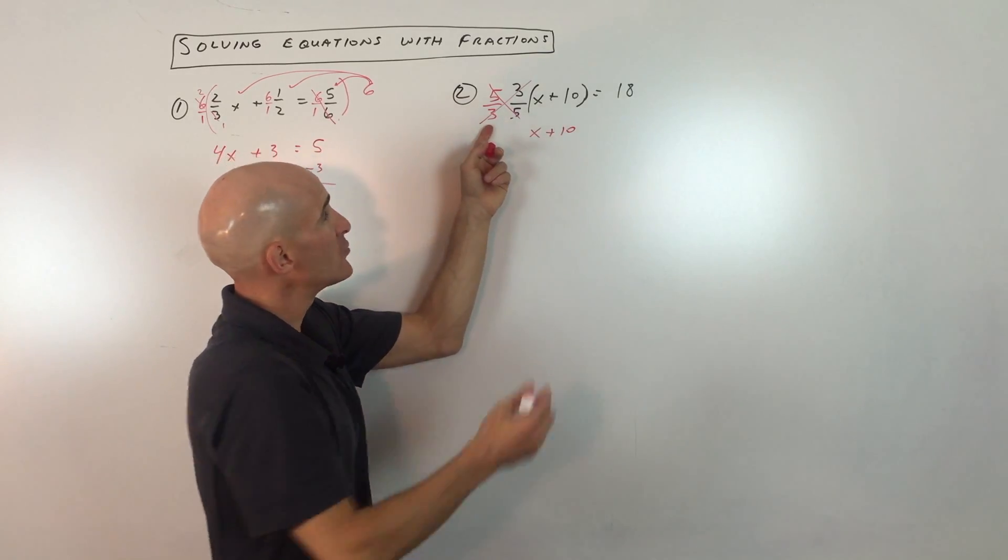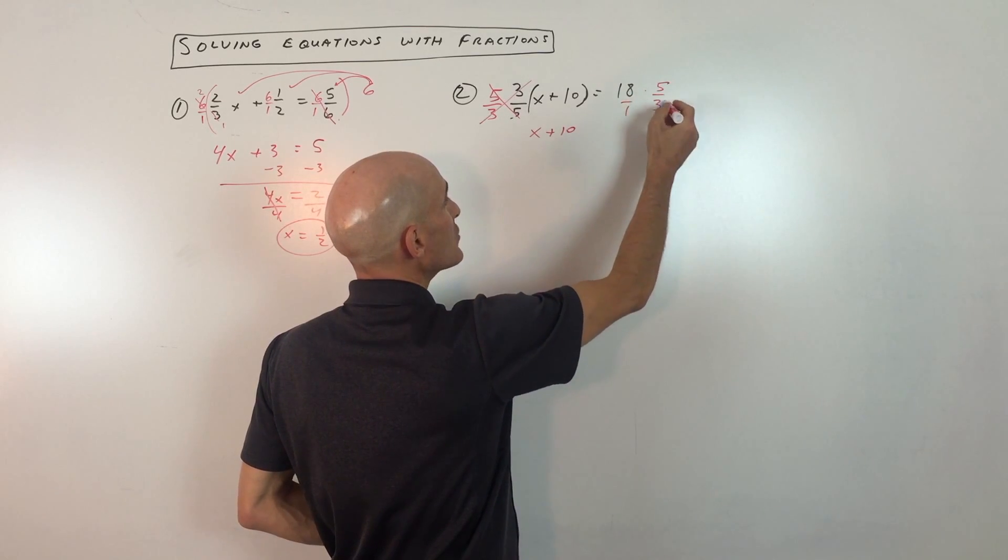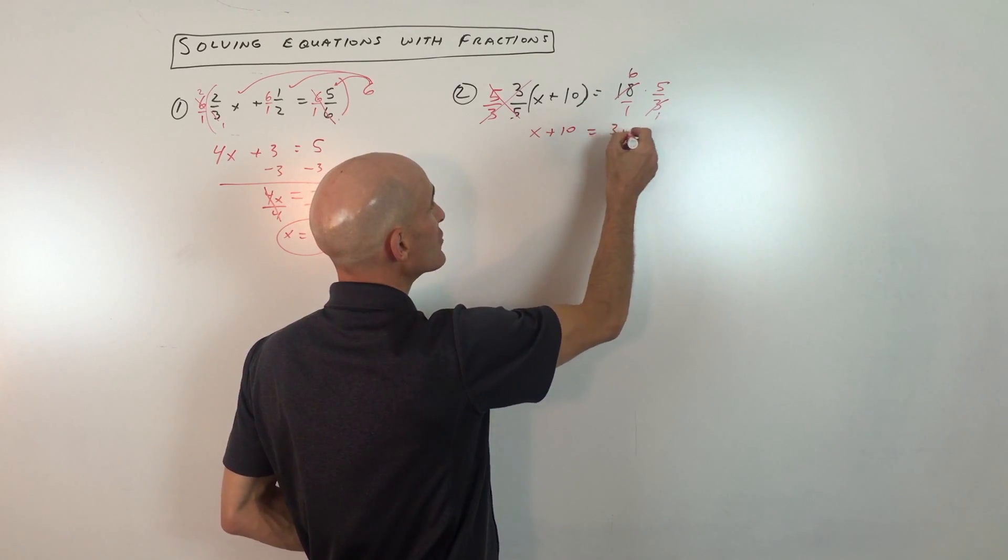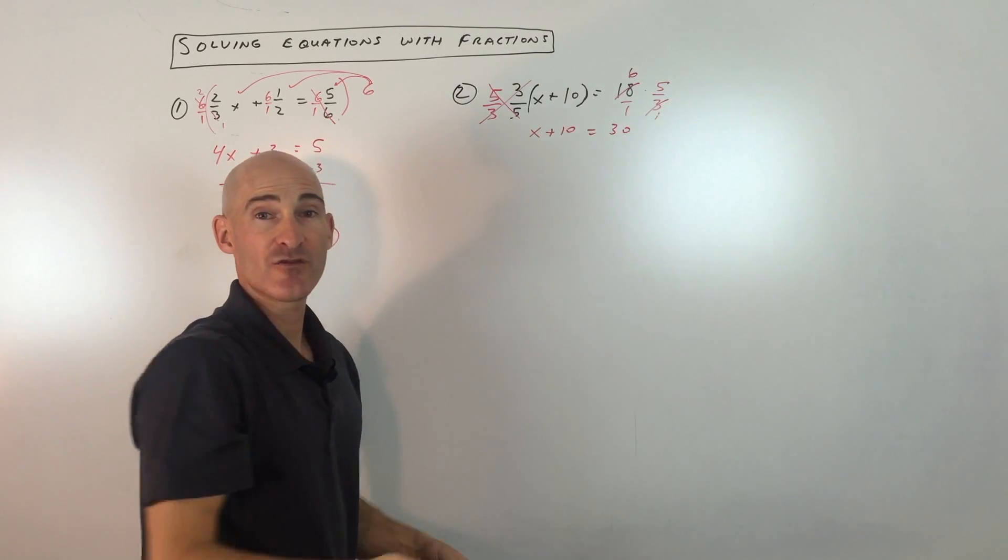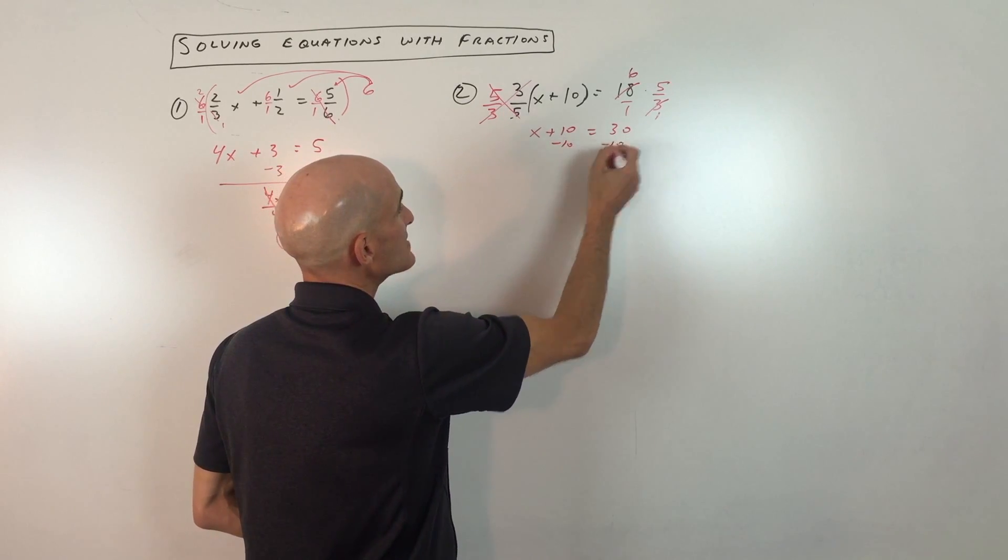But remember, whatever you do to the left side, you have to also do that to the right side. So again, you can see 3 goes into 18 six times. 6 times 5 is 30 over 1, which is 30. So now we've eliminated the fractions, which is a good thing. And we can subtract 10 from both sides and get x by itself. So you can see x equals 20.